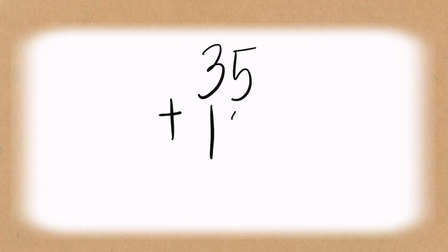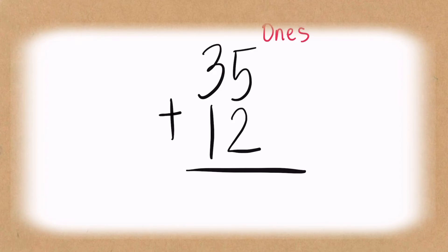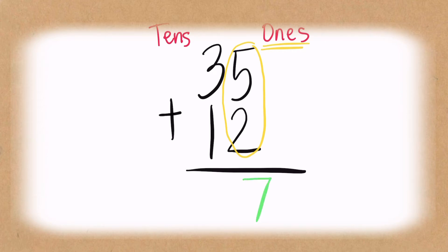Let's look at this example: 35 plus 12 is equal to blank. Where are we supposed to start first? Are we supposed to start with the ones place or the tens place? Yes, we must always start with the ones place. Digits five and two are part of the ones place. If you add them together, the answer is seven. Now let's go to the tens place: three plus one gives you four.